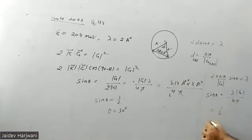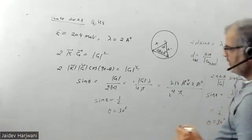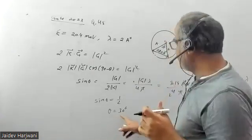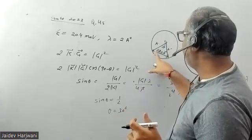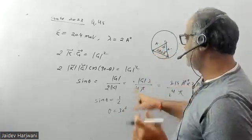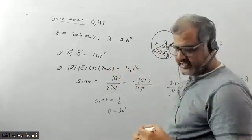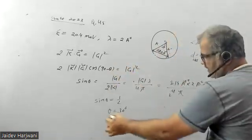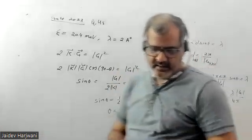Make sure to do the corrections, because the angle here is 90 minus theta. The angle between K and G is 90 minus theta, not theta. So the correct option will be theta equals 30 degrees. Thank you very much.